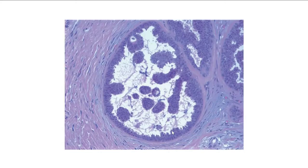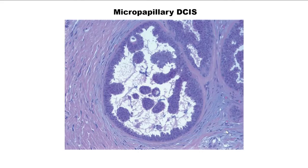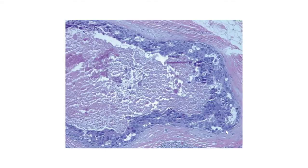Micropapillary DCIS shows atypical or malignant-appearing epithelial cells filling partially into the lumen, making papillary-like structures, but they lack fibrovascular cores. The comedotype DCIS shows central necrosis that is expanding and compressing the surrounding epithelium.